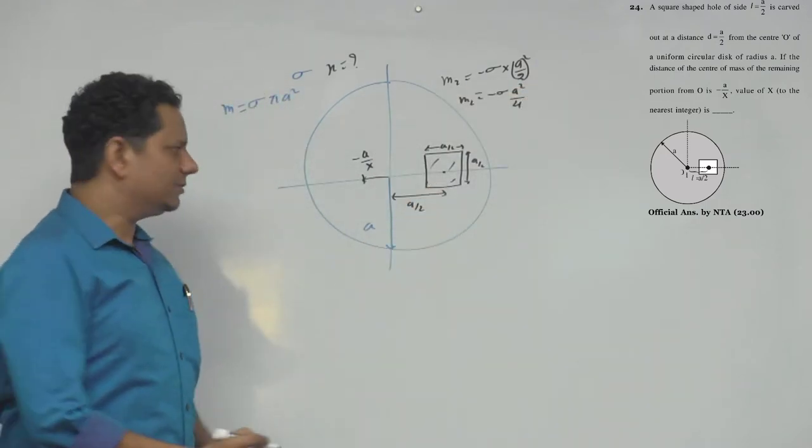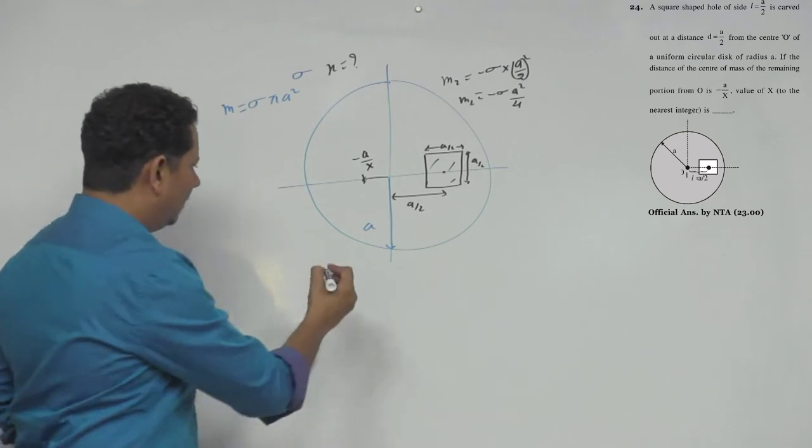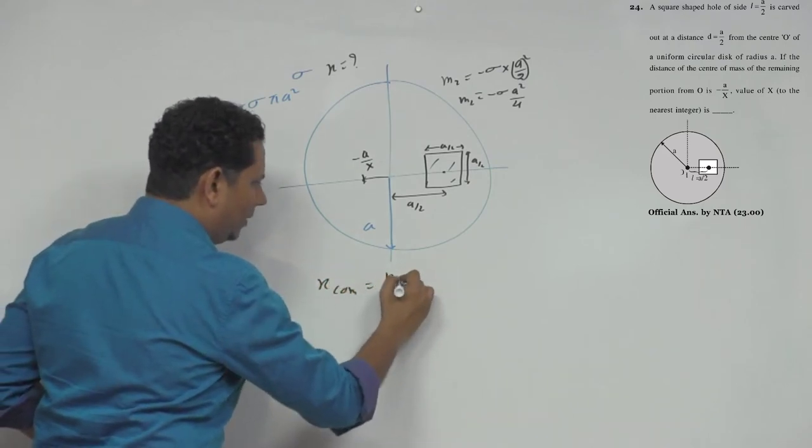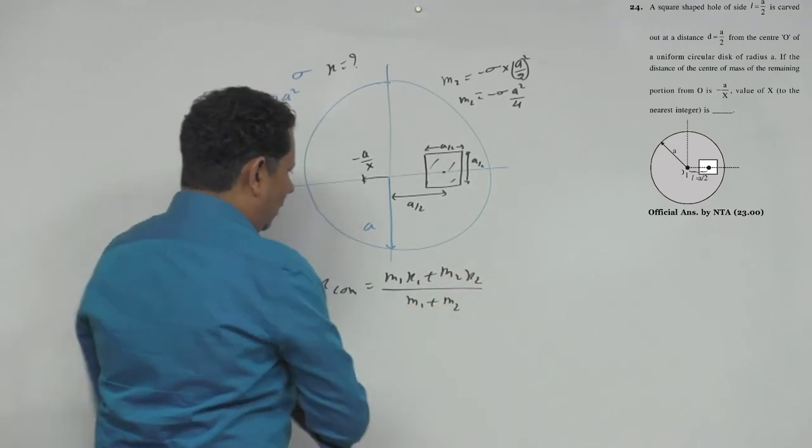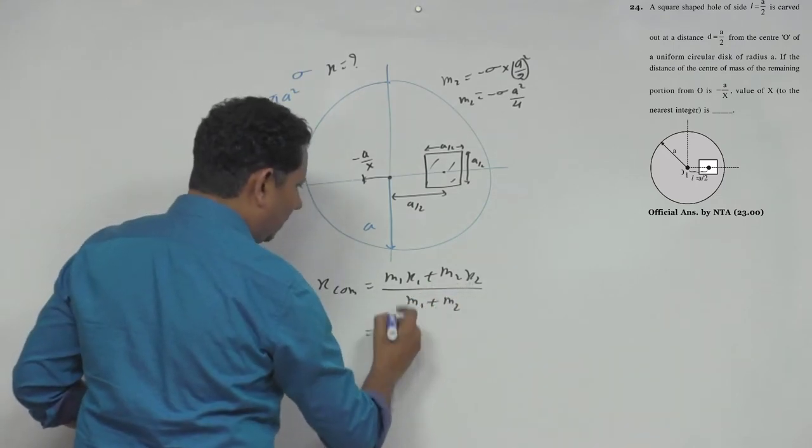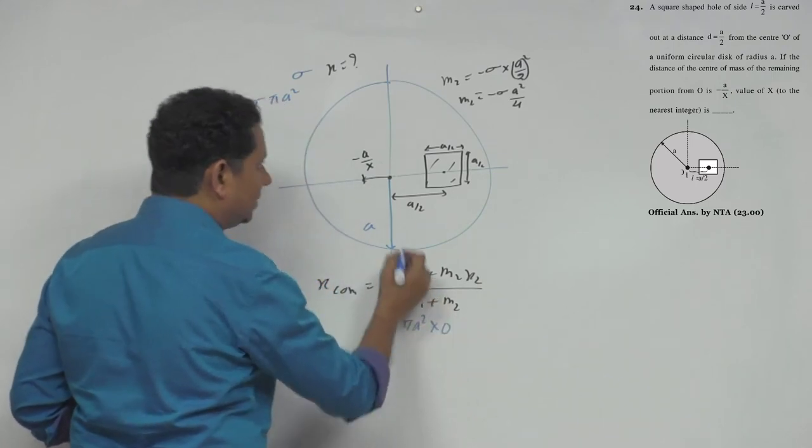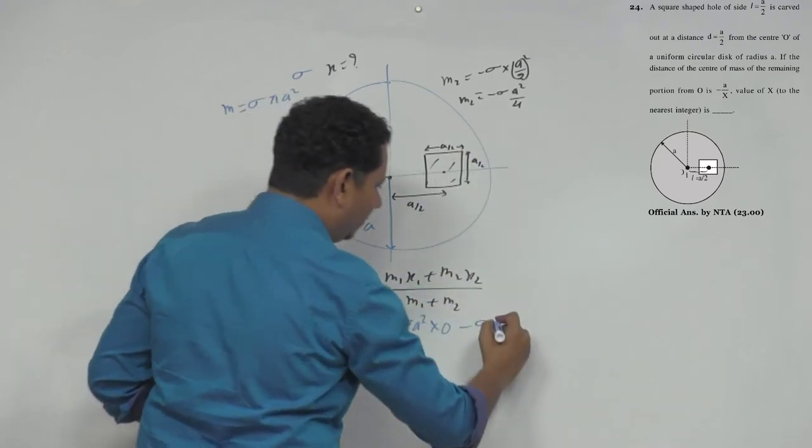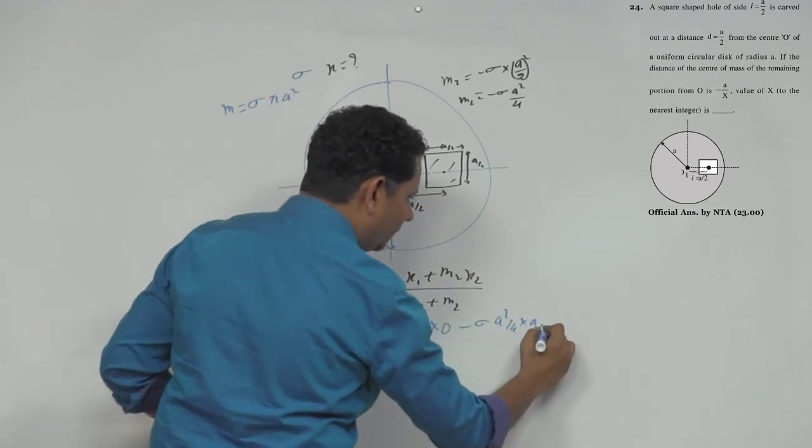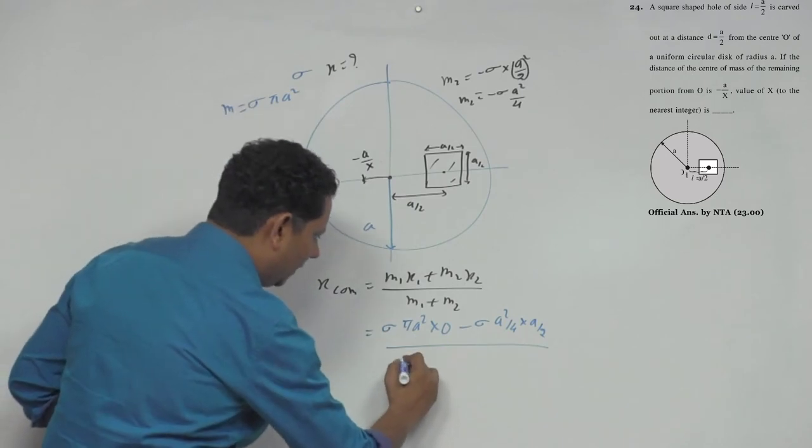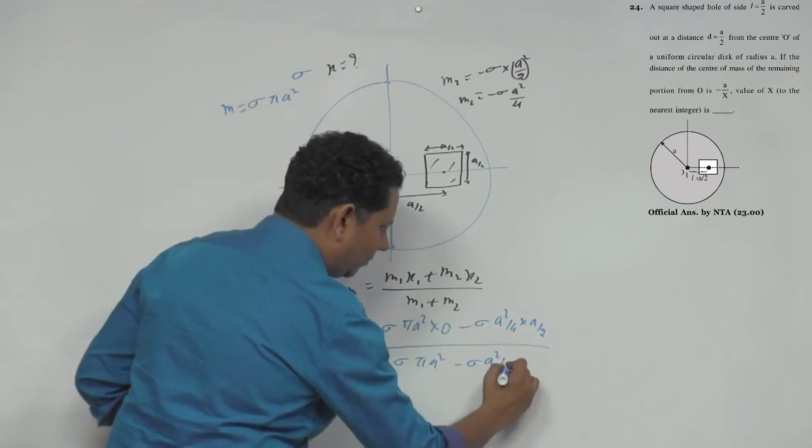This will be equal to m1 x1 plus m2 x2 divided by m1 plus m2. This will be equal to mass m1 sigma pi A square multiplied by 0, because x1 location is 0, minus sigma A square by 4 multiplied by location. This location is A by 2 divided by sigma pi A square minus sigma A square by 4.